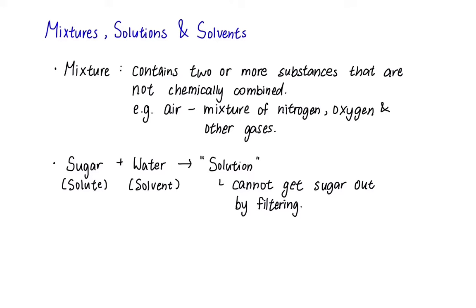Firstly, a mixture. A mixture contains two or more substances that are not chemically combined. We have air as an example. Air is a mixture of nitrogen, oxygen and small amounts of other gases such as carbon dioxide.